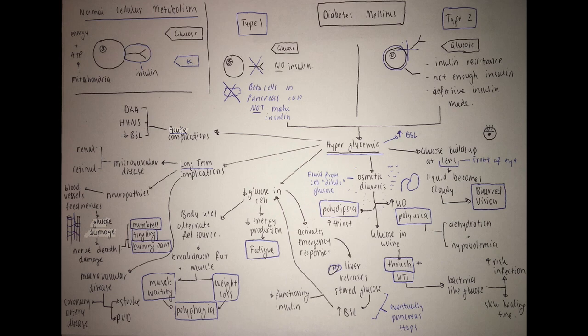An emergency response that your body activates in response to this no glucose in the cell is the liver releases stored glucose. But with no functioning insulin, this stored glucose that is released increases our blood sugar level and stays there, stays in the blood. There's no glucose in the cell still, so our emergency response is activated. Our liver releases more glucose, increasing our BSL, but there is no functioning insulin. You can see how that cycle can just go on and on.